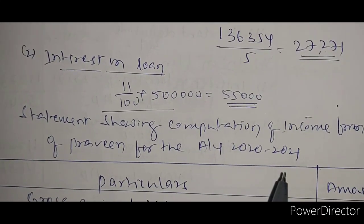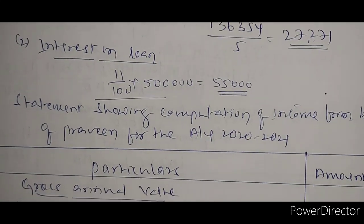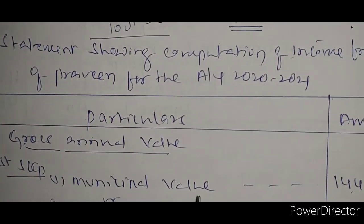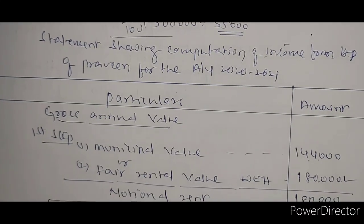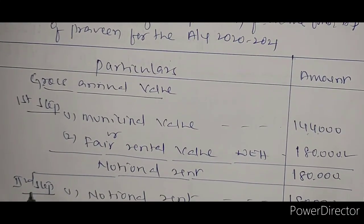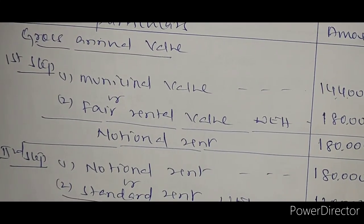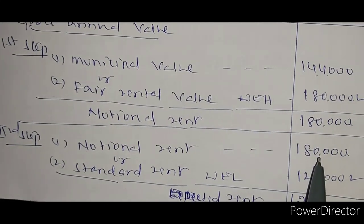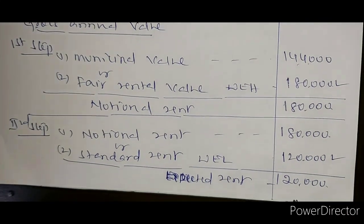Statement showing computation of income from house property of Mr. Pravin for Assessment Year 2020-21. Step 1: Municipal value or fair rental value, whichever is higher — one lakh eighty thousand is highest. Step 2: Notional rent compared with standard rent of one lakh twenty thousand; whichever is less — one lakh twenty thousand is the least — that is the expected rent.